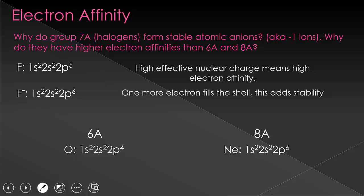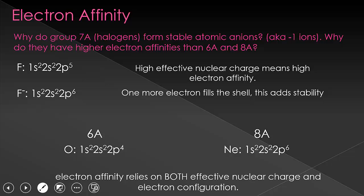So the take-home message from this slide is that both effective nuclear charge and electron configurations matter for electron affinity. This is why we have the exceptions for electron affinity and ionization energy that we don't have in other situations, such as atomic radius and what we're going to see with electronegativity coming up.